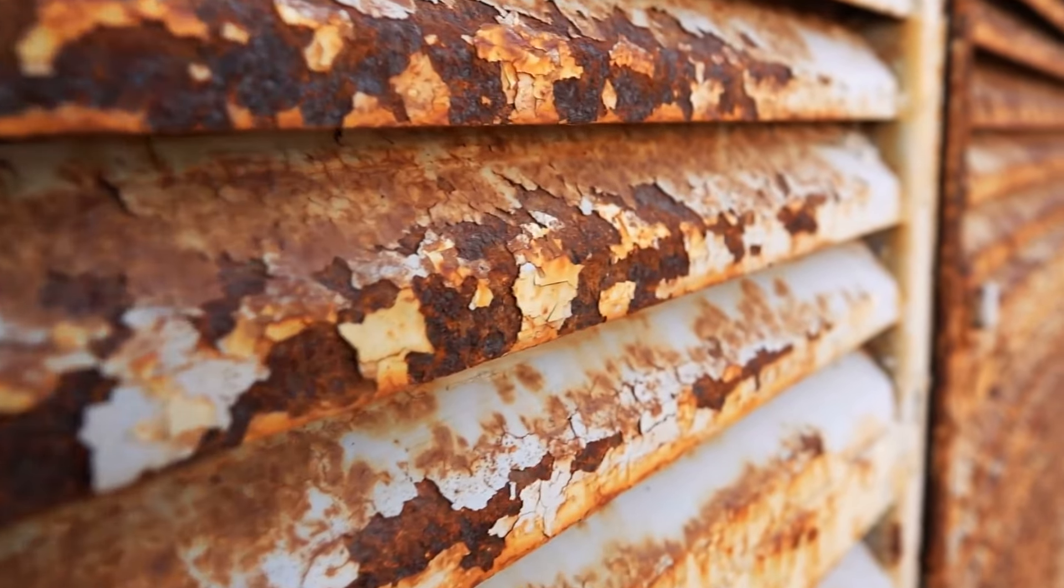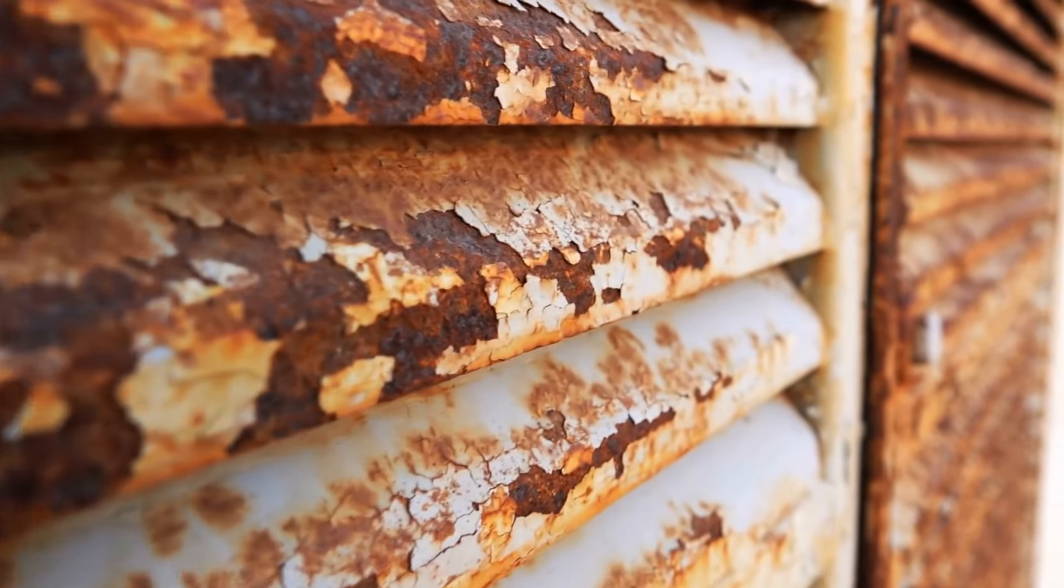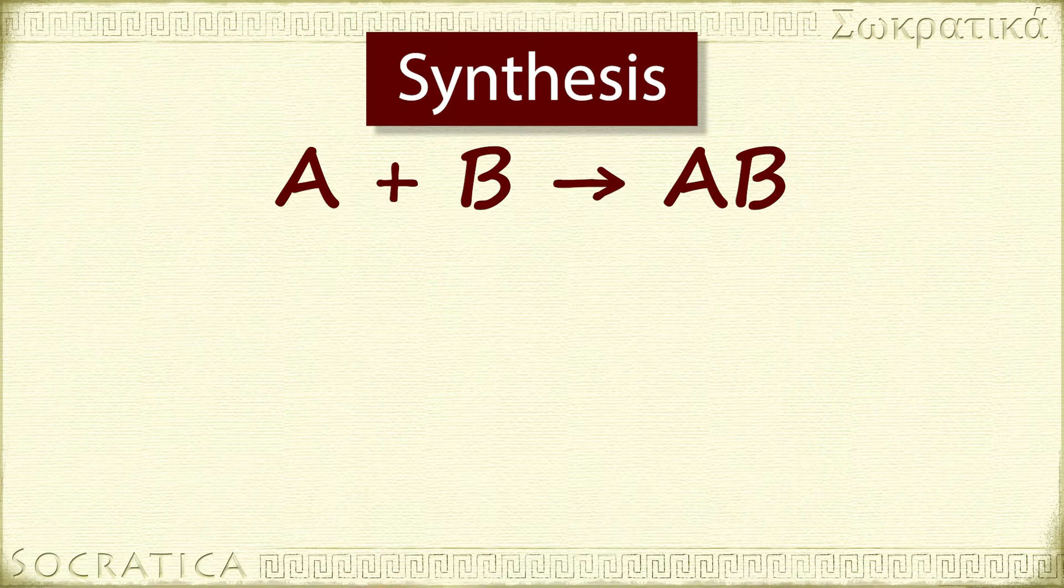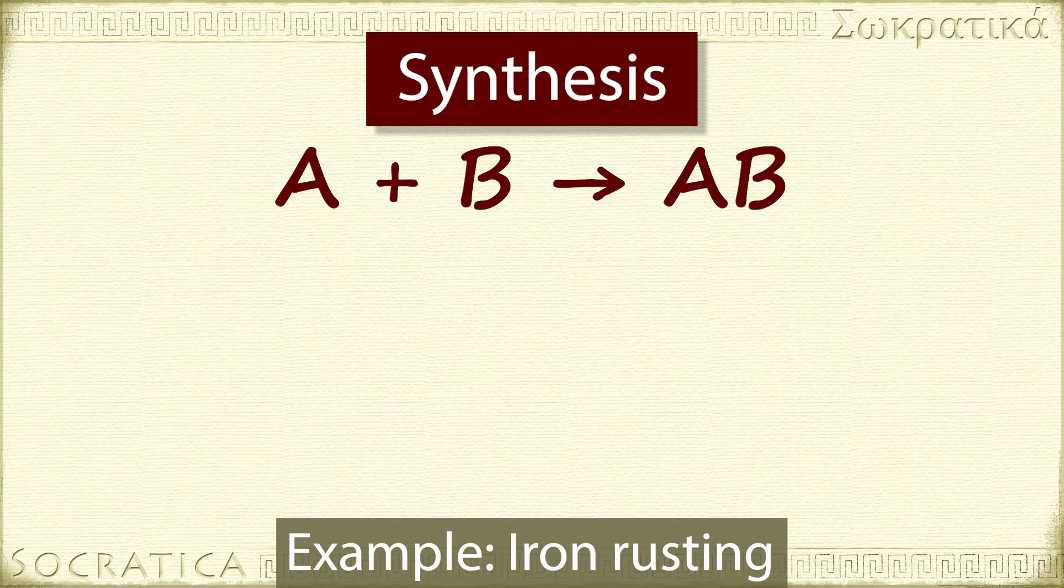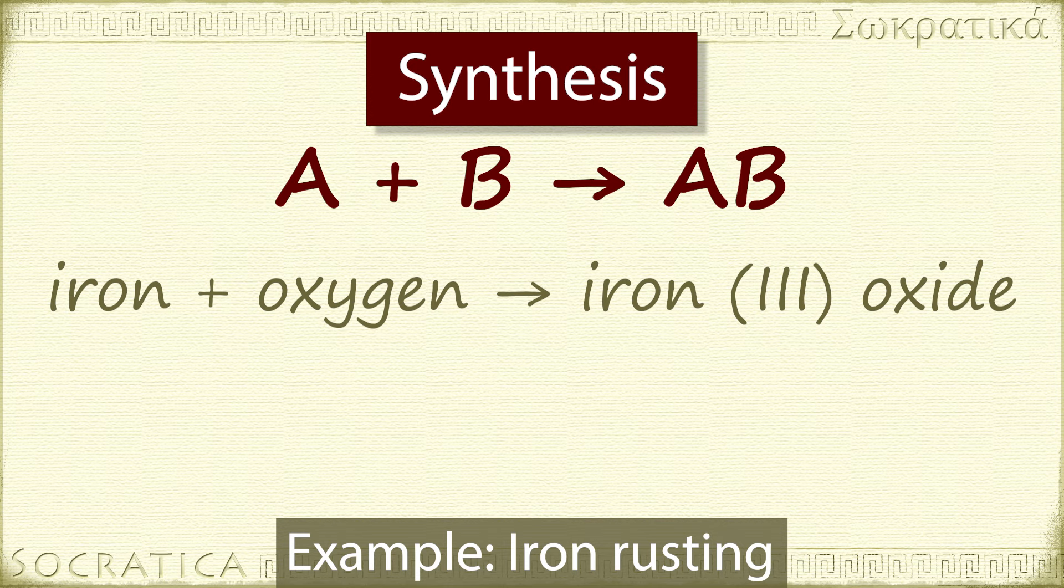A metal reacts with oxygen and forms a new compound that's a combination of the two elements. Our example reaction is iron rusting. Iron reacts with oxygen to form iron 3 oxide.